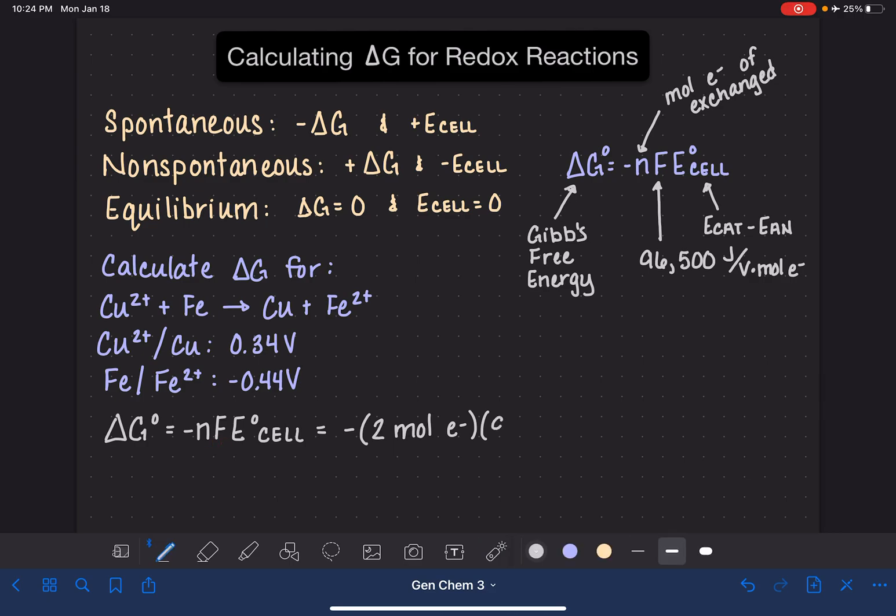Now we can plug in the next term, which is F, Faraday's constant, 96,500 joules per volts times the moles of electrons. And then the last term in this is the E cell, which we need to calculate. We've got to figure that out. So I'm going to do that work down here.